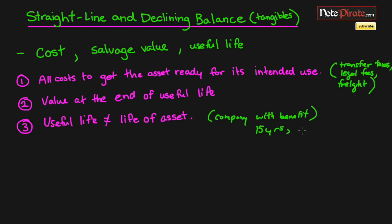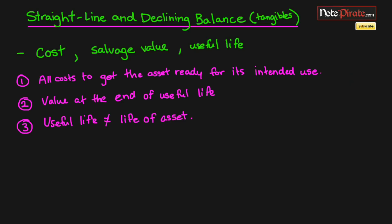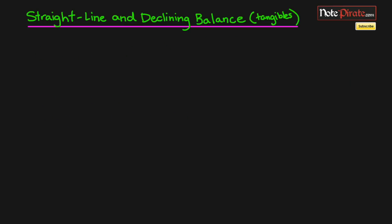Even though the asset becomes obsolete after 15 years, it might still physically function for 30 years. But since it's only going to benefit your company for 15 years, you use the useful life — you always use the useful life. These three values are typically given to you in a test or exam question. Now let's talk about straight-line depreciation.